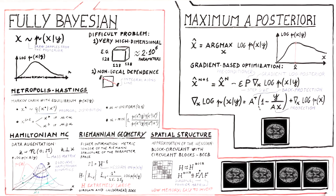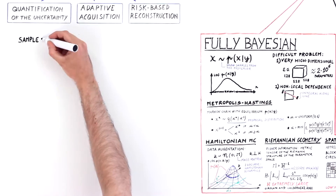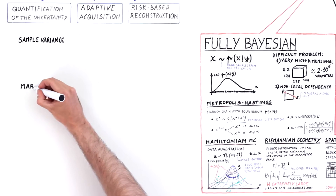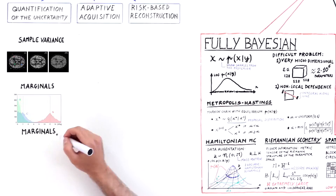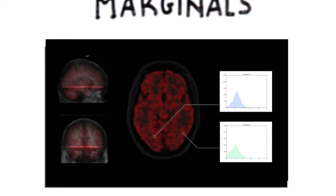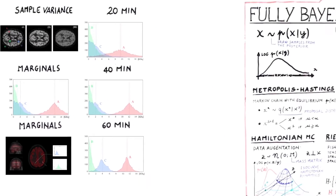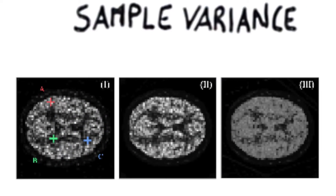A healthy volunteer was administered 170 MBq of fluorodeoxyglucose and scanned for 60 minutes with a Siemens Biograph mMR scanner. The list mode data was binned into three sinograms of 20, 40, and 60 minutes. 5,000 samples were drawn for each of the three measurements. The samples of the posterior can be used to quantify and visualize the uncertainty associated with the tomographic measurement. Shown from left to right are the maximum a posteriori estimates, the mean of the samples, and the sample variance for the 40-minute acquisition.